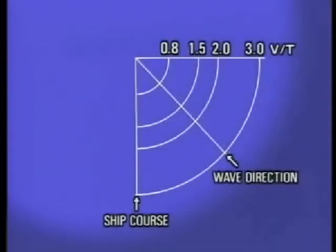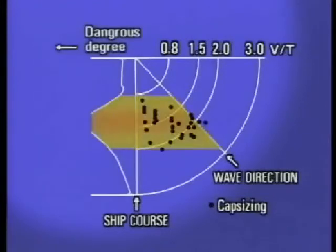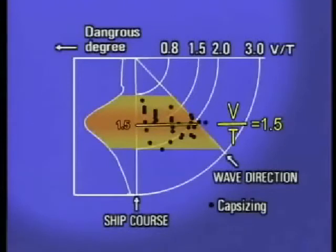Now let's see how to avoid the risks stemming from a reduction in stability. The diagram shows instances of the model ship capsizing in tank experiments. You can see capsizing occurred around 1.5 when dangerous encounter wave grouping phenomena are more frequent.